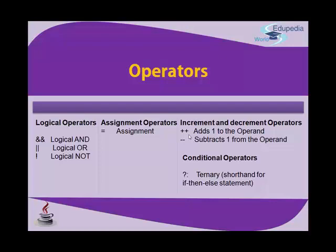The same concept applies to the decrement operator (--), which subtracts one from the operand, with the same pre and post behavior. Then we have the conditional or ternary operator, which is a shorthand for if-then. The syntax is: condition ? value-if-true : value-if-false. The condition is written before the question mark, what to do if true comes after it, and what to do otherwise comes after the colon.